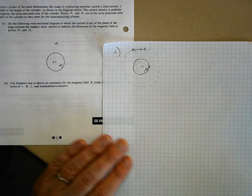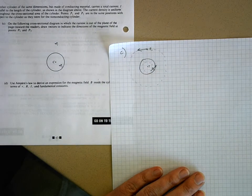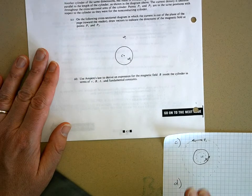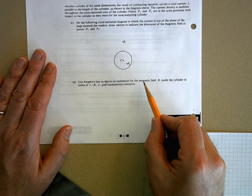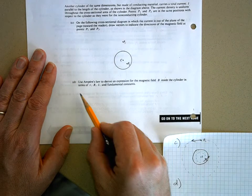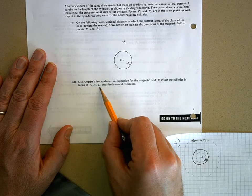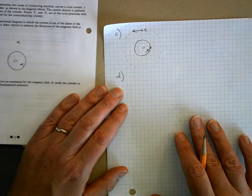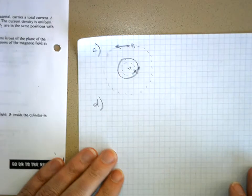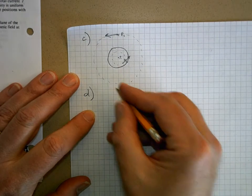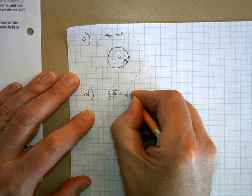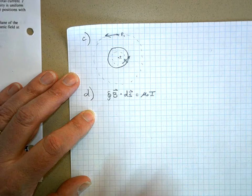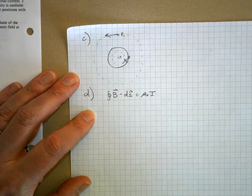All right. Let's move on to part D. And part D says, use Ampere's Law to derive an expression for the magnetic field B inside the cylinder in terms of R, capital R, I, and the fundamental, or the current, and the fundamental constants. Okay? So, we're on the inside, and let me go back in. Well, Ampere's Law, B dot ds equals μ naught I. And here, the I is the current enclosed by my Ampereian loop.